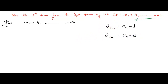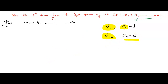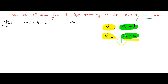aₙ₊₁ means you are finding the next term — the nth term is the last term, and from that you are finding the next term, so you have to add the common difference. If you want to find the previous term, you should do aₙ minus d. Preceding means previous term; succeeding means next term.